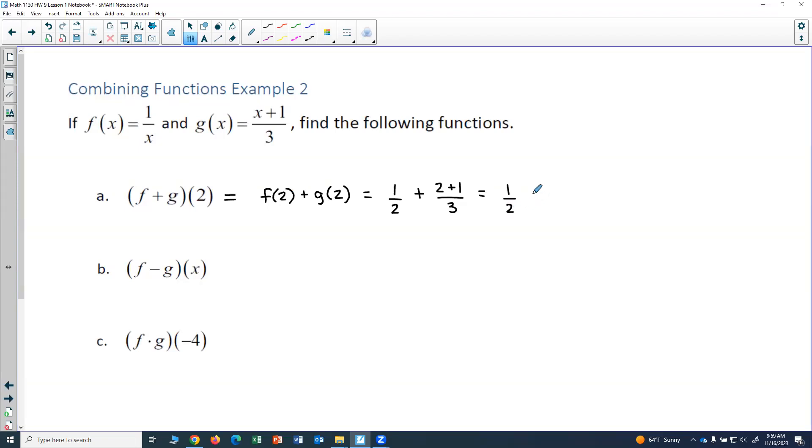So this would actually be 1 half plus 3 over 3, which gives me 1 half plus 1. Now I could rewrite the 1 as 2 over 2, and so this would give me 3 halves as my final answer. And you could also use your calculator if you needed to, to add the 1 half and the 1.